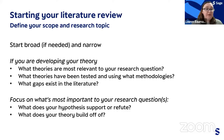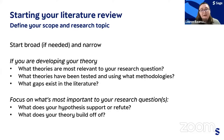Once you have your question, you want to start thinking about how you can help develop your own theory. You're going to ask yourself: what theories are most relevant to your research question, what theories have been tested and using what methodologies, and what gaps exist in the literature. You'll use all of these concurrent texts to help define your own research question, the methods that you'll use, and make sure that you're answering something relevant to the field. And finally, as you're starting your literature review, you want to focus on what's important to your research question, asking yourself questions like what does your hypothesis support or refute, or what does your theory build off of.